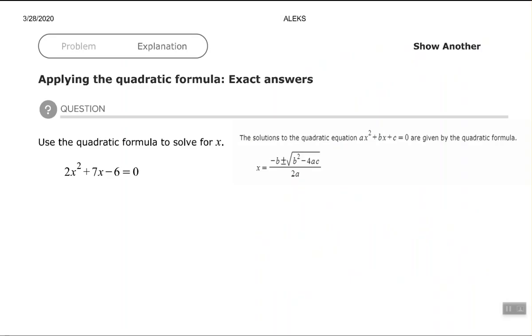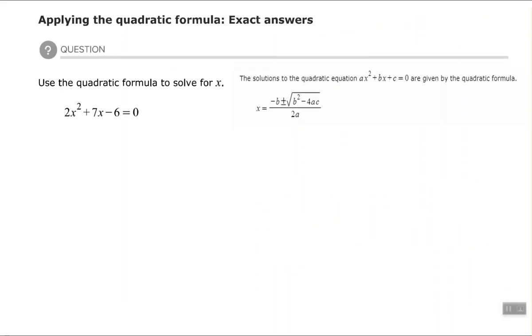Let's try another one. So here we have applying the quadratic formula, exact answers again. And this one we have 2x² + 7x - 6 = 0. So we have a setup like we wanted. The expression is in descending order and my leading coefficient is positive. So a equals 2, b equals 7, and c equals -6, keeping the sign that's to the left of it.